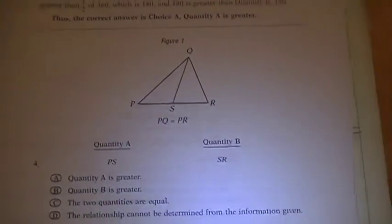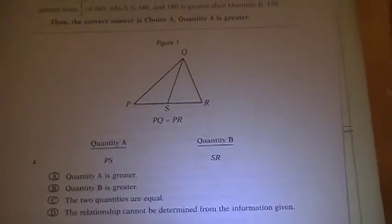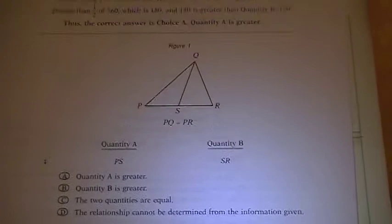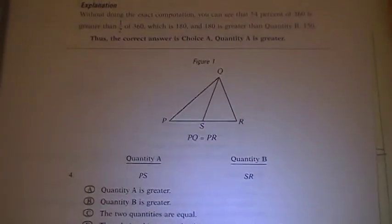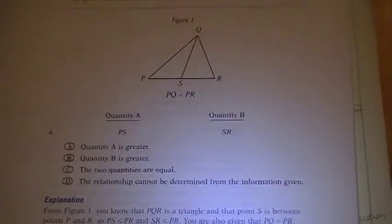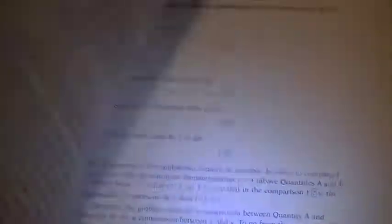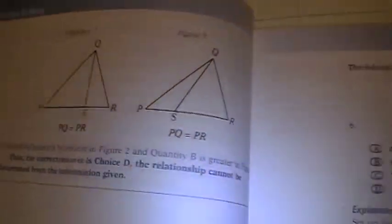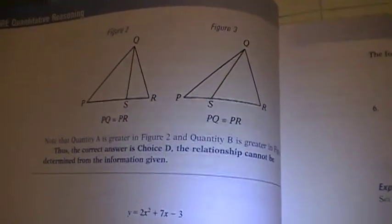Number four is a triangle geometry type question. It's not drawn to scale. They say PQ is equal to PR, so it's really supposed to look much more isosceles. In this one, on the next page, they have the two different scenarios that it could be, and it turns also into another D.